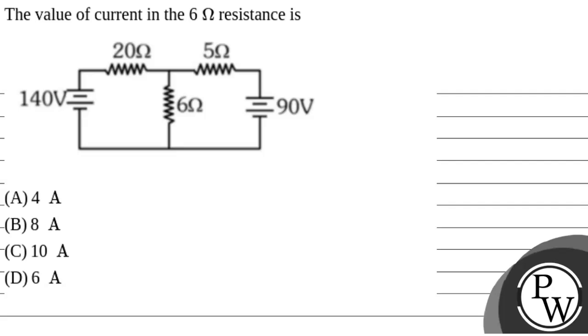I love a chore. Let's read the question. The question says that the value of current in the 6 ohm resistance is. So, we will solve this question.